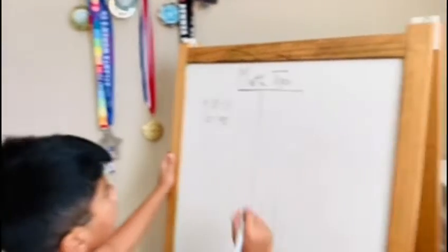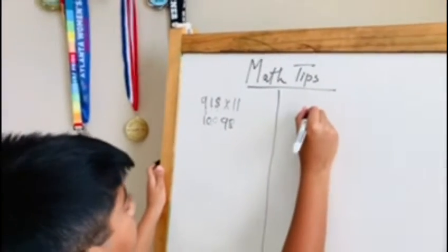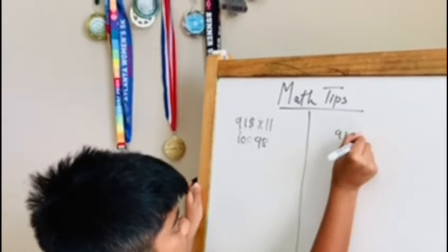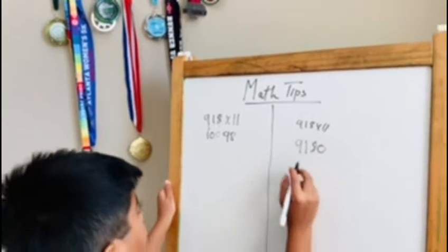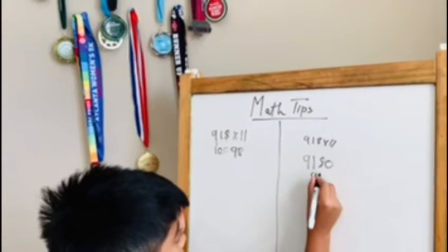And the other way is just simpler. You just add the zero in the back and then add the regular number.